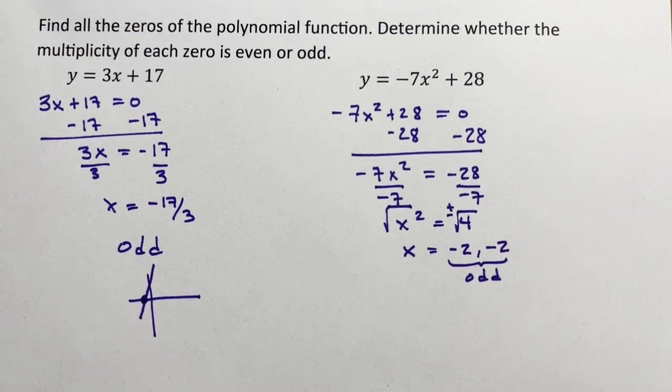If it were an even multiplicity, and neither of these have it, an even multiplicity is when a curvy graph has a turning point on the graph.